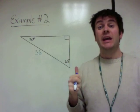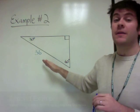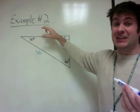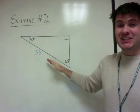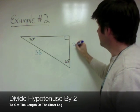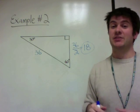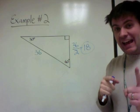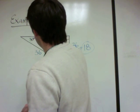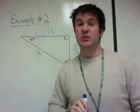In example 2, we have a 30-60-90 triangle where we know the hypotenuse is 36. We first find the short leg by dividing the hypotenuse by 2: 36 divided by 2 is 18. Then we multiply the short leg by root 3 to get the long leg: 18 root 3. So the short leg is 18, the long leg is 18 root 3, and the hypotenuse is 36.